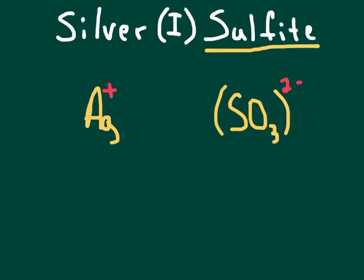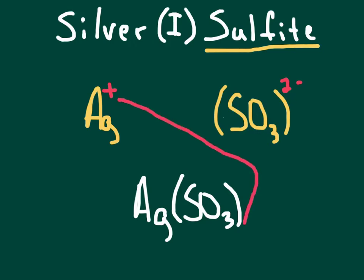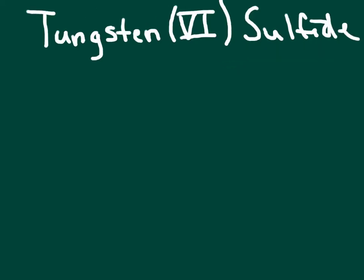You bring them down, and squish them, Ag, parenthesis, SO3. And then you bring your charge down, and flip and reverse. So, you bring the 1 down here. You bring the 2 here. So, you'll have Ag2, parenthesis, SO3, close parenthesis. Even though this is 1 sulfite, there's only 1 sulfite polyatomic there, go ahead and use the parentheses. It helps you keep things straight.